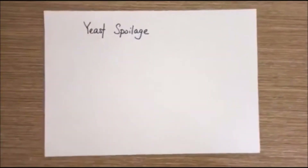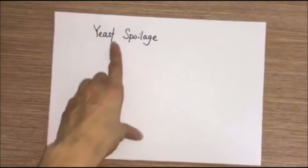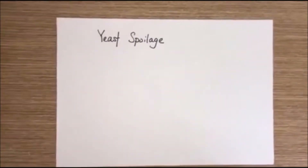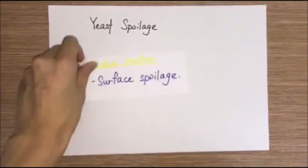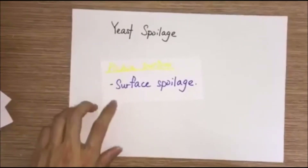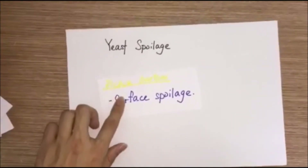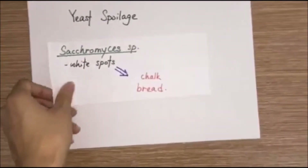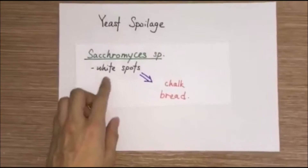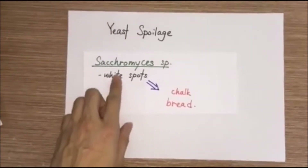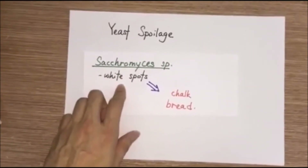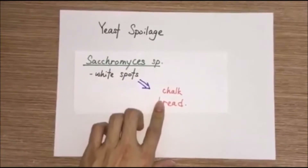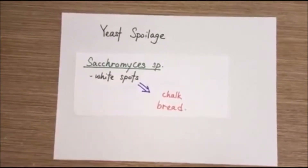The second type is yeast spoilage. Pichia causes surface spoilage on the bread. Saccharomyces species causes white spots on the bread, where the bread is known as chalk bread.